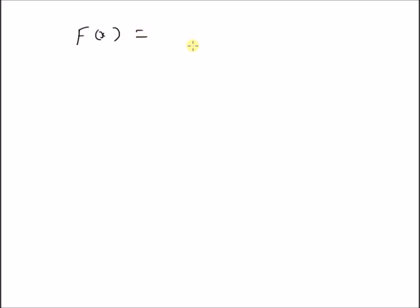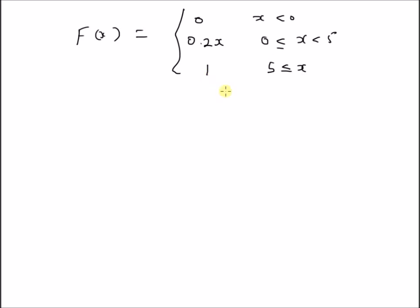Welcome. In this short video, let us look at an example illustrating how to calculate the probability of different intervals given a cumulative distribution function (CDF). Consider a simple CDF: f(x) = 0 for x less than 0, f(x) = 0.2x for x between 0 and 5, and f(x) = 1 for x greater than 5.